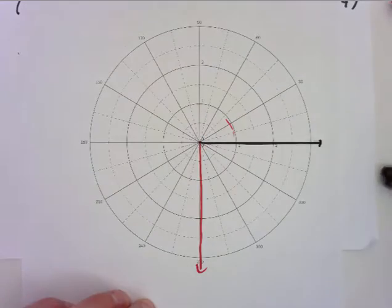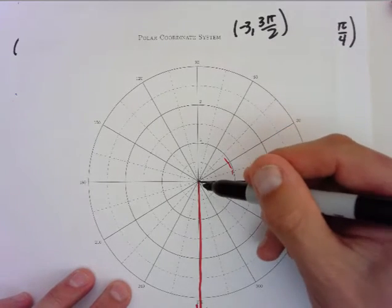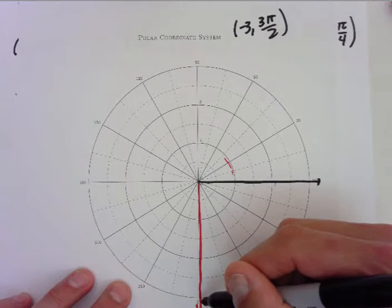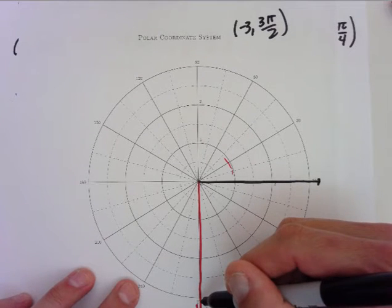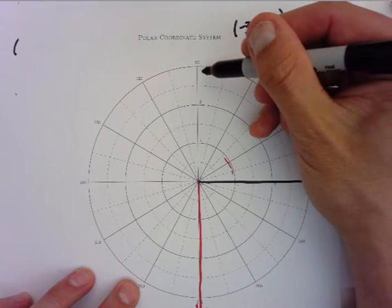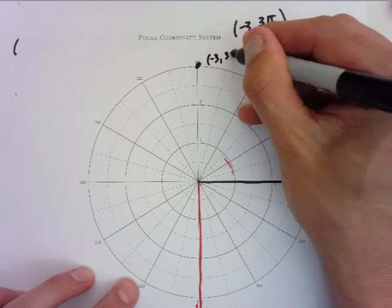Now, if I want to get -3, this is where I've got to be careful. Normally, I would say, 1, 2, 3, but that's for positive 3. If I want -3, I have to take an R value. It's negative. I've got to go opposite, so I've got to go way up here. So, there is -3, 3π/2.